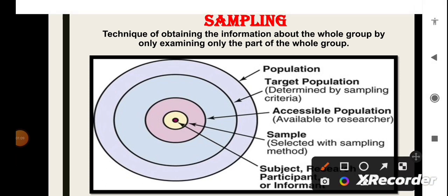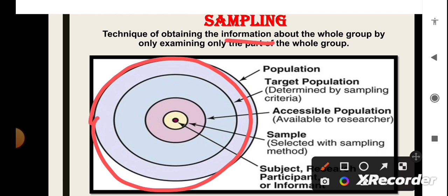As previously, we have talked that sampling is very important. So, now let's see what is sampling. Sampling is the technique of obtaining the information about the whole group by only examining the part of the whole group. So, the whole group is the population and sample is the subset of this population. So, what we have to do is, to study any population, we take the sample from that population. There are two populations which can be target population and accessible population according to the sampling. The target population is determined by the sampling criteria and the accessible population is available to the researcher.